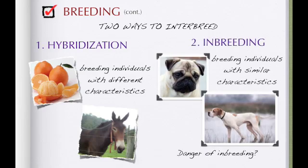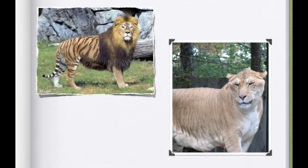The other way you can interbreed is if you like the look of a certain dog or want to keep traits, you do what's called inbreeding. We talked about the dangers of inbreeding — the main danger is health concerns. For example, the pug has respiratory problems, so any defects in the genes keep getting passed on. We also talked about the liger — the one on the left is fake — as an example of interbreeding by hybridization.